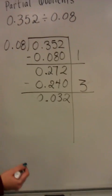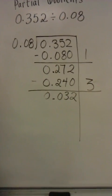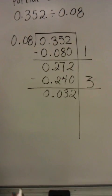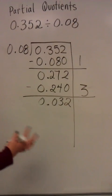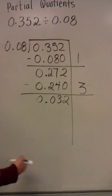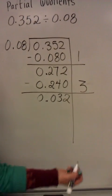I want to think now about what I would have to multiply hundredths by to get thousandths. I have to multiply hundredths by tenths to get thousandths. I also know that my basic fact 8 times 4 is 32, so I know that I'm going to need 4 tenths.